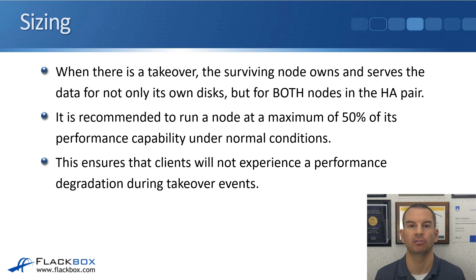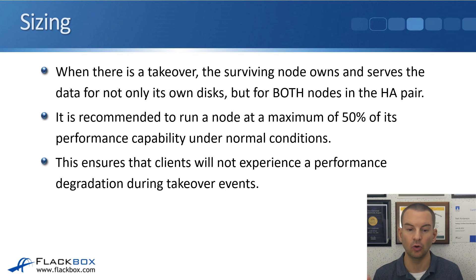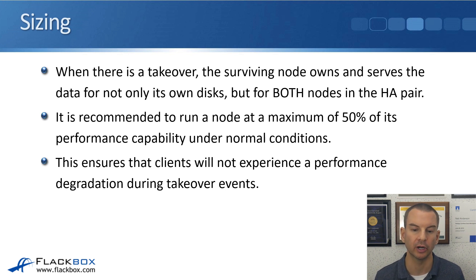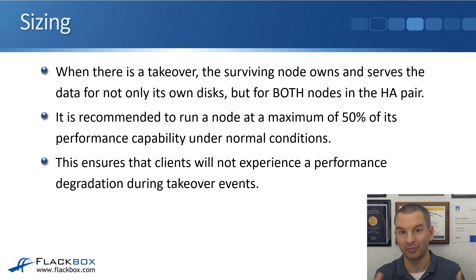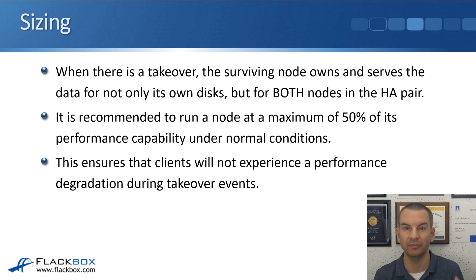Sizing is an important consideration. When there's a takeover, the surviving node owns and serves data for not only its own disks but for both nodes in the HA pair — it's doing double its normal work. Because of that, it's recommended to run a node at a maximum of 50% of its performance capability under normal conditions. A node is just another name for a controller. By having each node never operating above 50% of its capability, it can take on the additional load of the other controller if it fails, remaining below 100% so clients don't experience performance degradation.